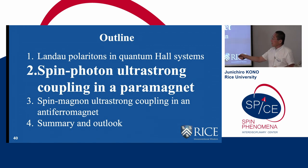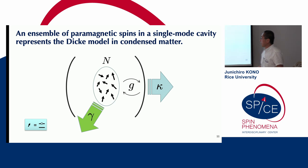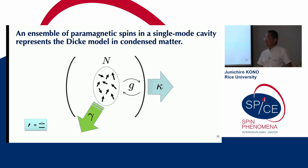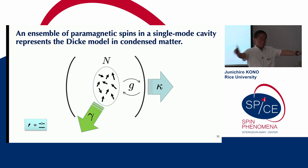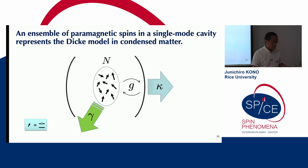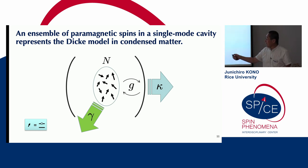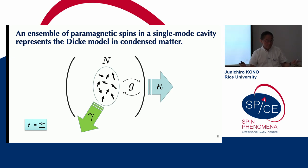Let me move on to the second part: spin-photon ultra-strong coupling. The Landau level system is very nice and easily modeled, but it's mostly classical in the sense that cyclotron resonance is a bosonic excitation — we can model it as a simple harmonic oscillator. It's an interaction between two simple harmonic oscillators, boson-boson interactions. But when we have an ensemble of paramagnetic spins, we can more truthfully represent the original Dicke model: the interaction of an ensemble of N two-level atoms or spins with a single mode of cavity photons.